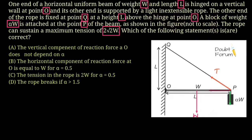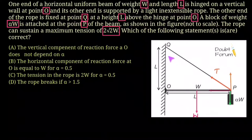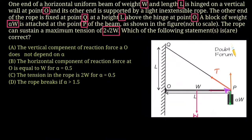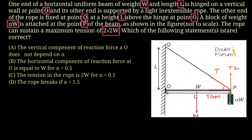We can break the tension T into two components: one horizontal and one vertical. The length of the beam is L and the distance between point Q and O is also L, with a 90° angle between them, so these angles are 45°. The horizontal component is T·cos45 and the vertical component is T·sin45, and cos45 = sin45 = 1/√2.